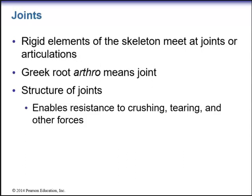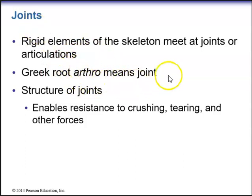So what are joints? We know that the rigid elements of the skeleton will meet at joints or articulations. We use the Greek word arthro when referring to joints — arthro means joint. The structure of joints enables resistance to crushing, tearing, and other forces.